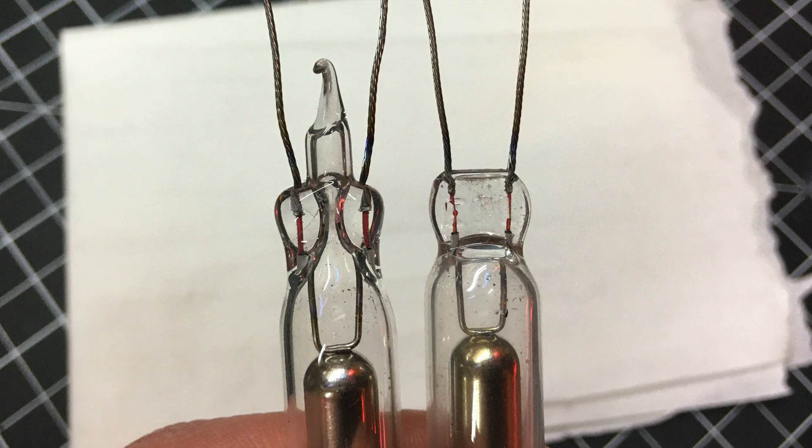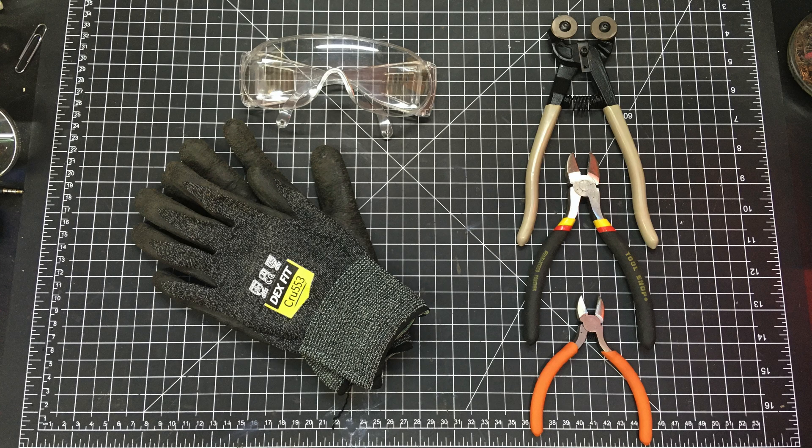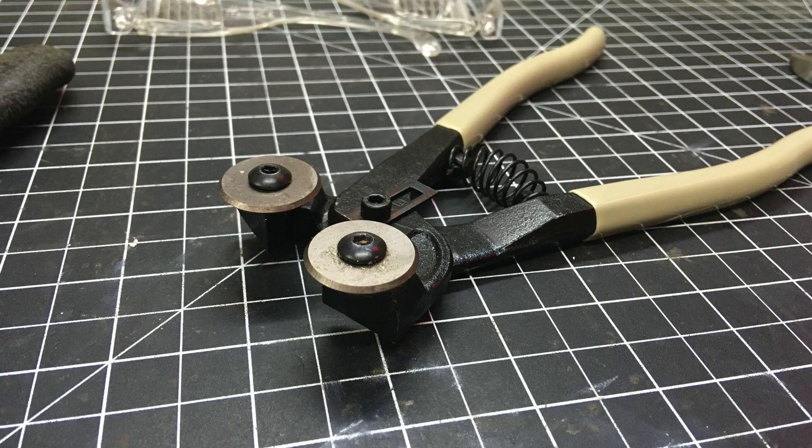The procedure is easier on non-tubulated electrodes because there is more working area, but it is possible on tubulated electrodes as well. To get started, we will need a few supplies: gloves for cut protection, safety goggles as there will be shards of flying glass, and your choice of cutting implement. I prefer these.